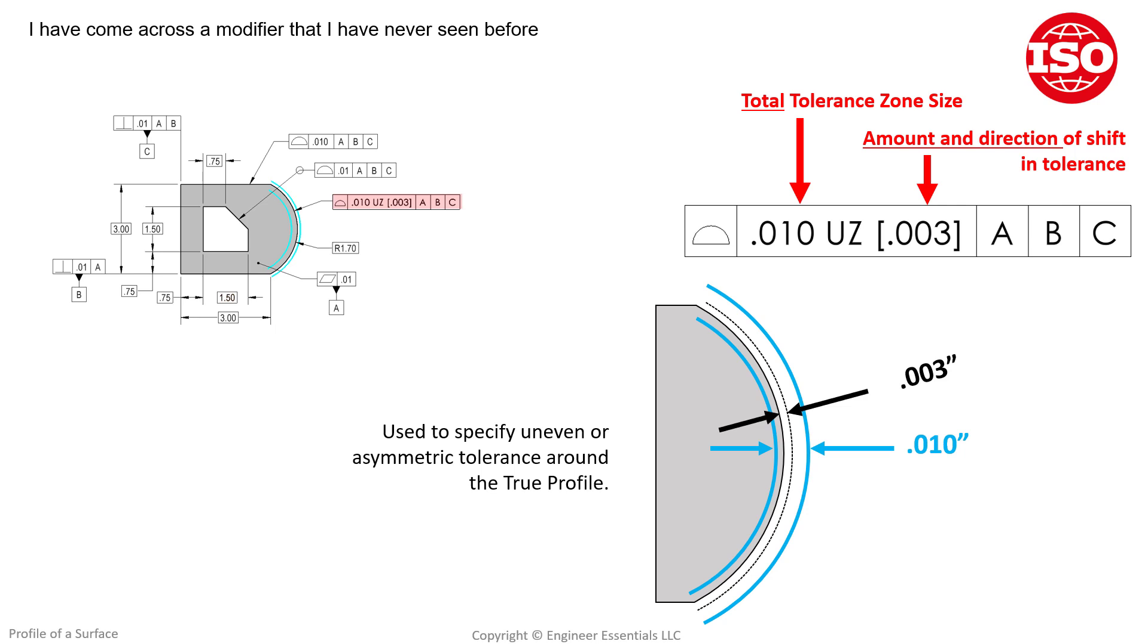Now this UZ modifier is directly an ISO modifier, right? Something similar in the ASME world, which we've covered in various videos and topics on our website, is the U inside a circle. That is the unequally disposed modifier, and that gets used in this location here instead of the UZ, and that is the ASME version. But the ISO version is a little bit different and it's interpreted a little bit differently.